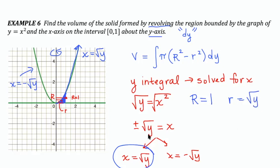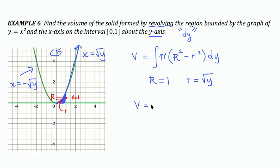Now I'm ready to go back to my integral and substitute. So I'm going to have an integral of pi times capital R squared minus little r squared dy.